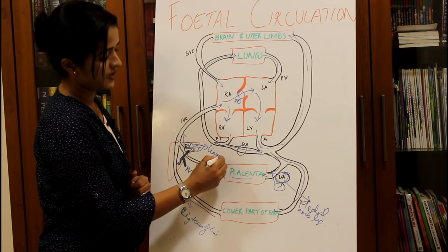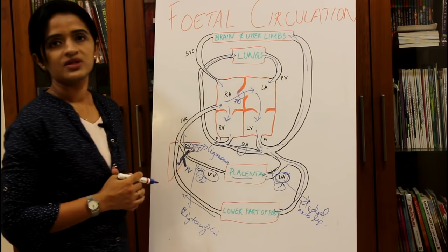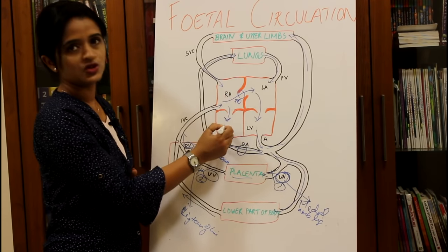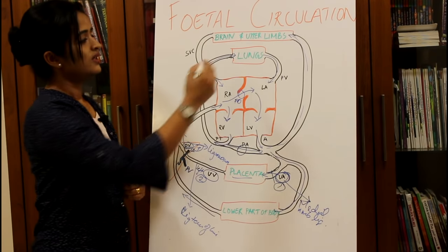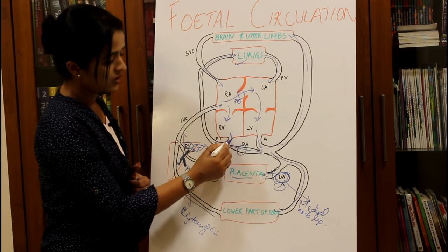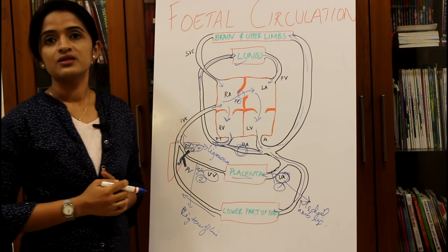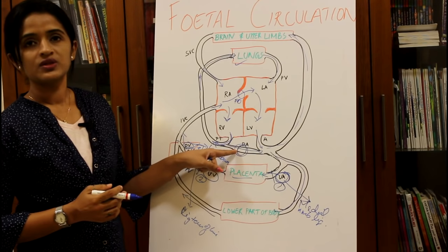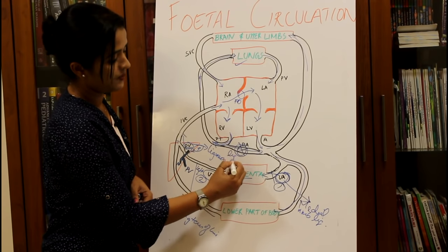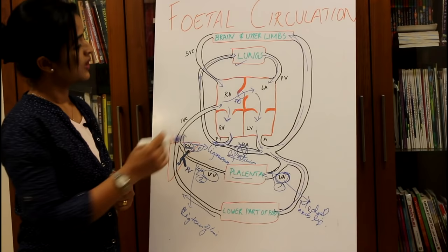The ductus venosus undergoes fibrotic change to form the ligamentum venosum. After birth, the lungs become functional so the pulmonary artery needs a large quantity of blood. The major amount of blood now passes through the pulmonary trunk into the lungs, so there is no more need for the ductus arteriosus. The ductus arteriosus, which connected the pulmonary trunk with the aorta, gets obliterated to form the ligamentum arteriosum.